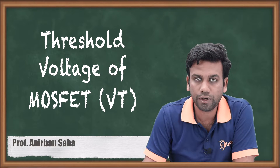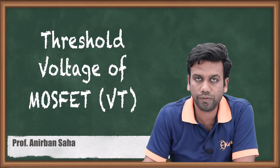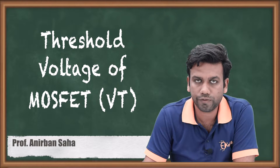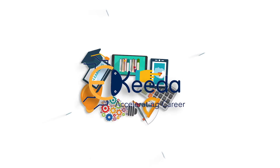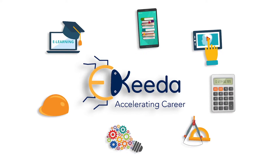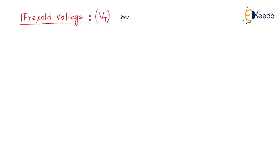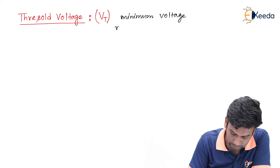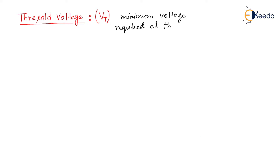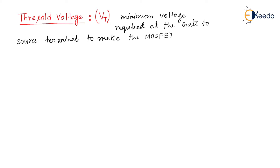Hello friends. In this video we are going to discuss about the threshold voltage of enhancement type MOSFET. The threshold voltage is defined as the minimum voltage required at the gate to source terminal to make the MOSFET ON.